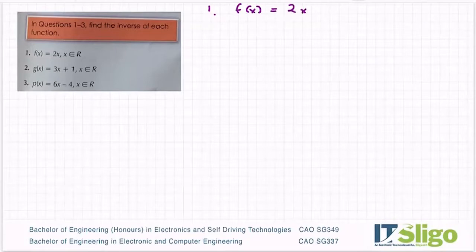The first step we had in the three steps in the previous video was to replace f(x) with y, so we have y is equal to 2x, that's the first step.